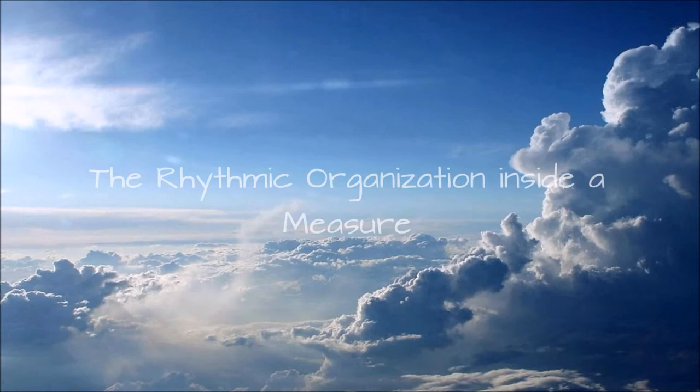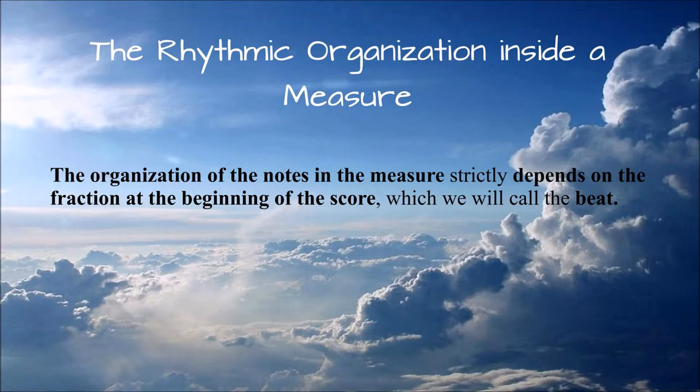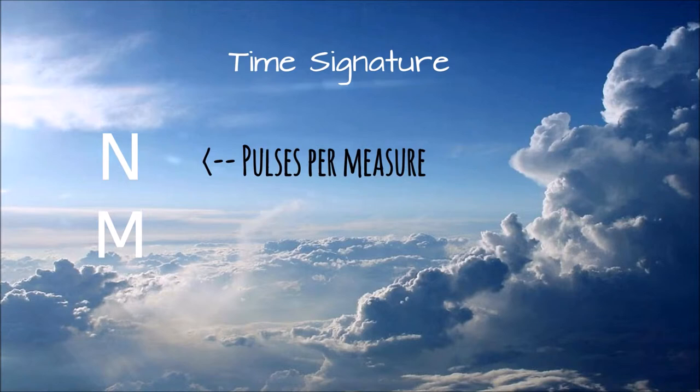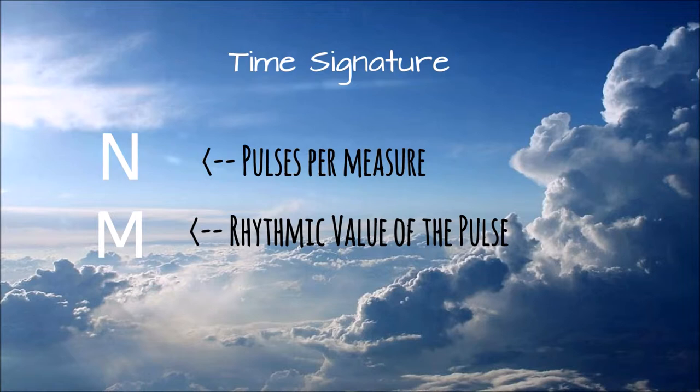Before moving to solfège, we need to talk first about the rhythmic organization inside the measure. As stated earlier, the organization of the notes in the measure strictly depends on the fraction at the beginning of the score, which we will call the beat. The number on top represents the number of pulses in every measure, while the number below represents the rhythmic value of the pulse.